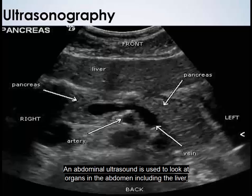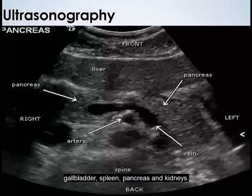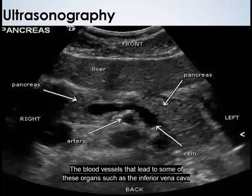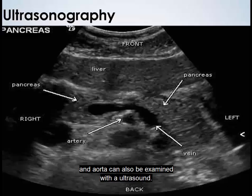An abdominal ultrasound is used to look at organs in the abdomen, including the liver, gallbladder, spleen, pancreas, and kidneys. The blood vessels that lead to some of these organs, such as the inferior vena cava and aorta, can also be examined with an ultrasound.